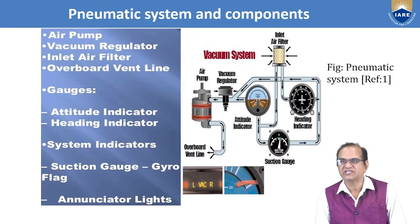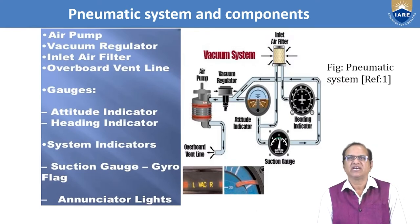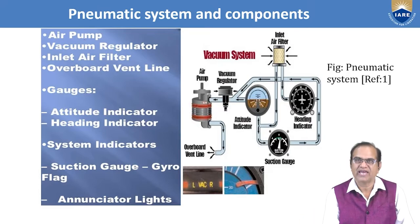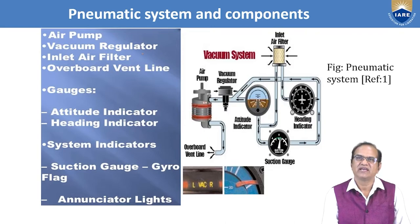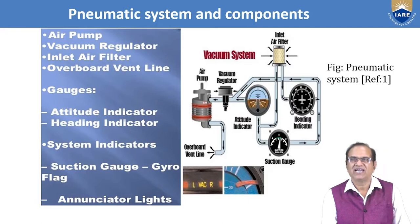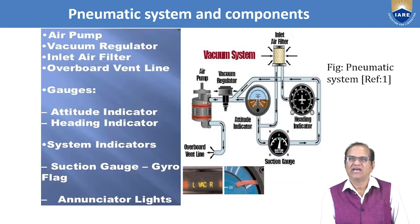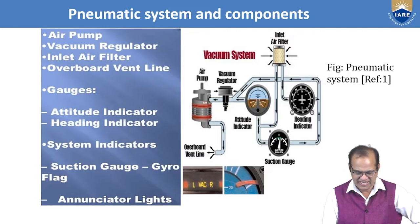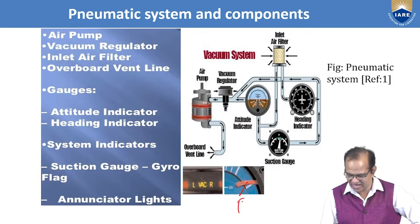The components of the pneumatic system include an air pump, a vacuum regulator, an inlet air filter, an overboard vent line, gauges, an attitude indicator, a heading indicator, a system indicator, a suction gauge, gyro flags, and enunciator lights. In the system diagram, air enters through the inlet air filter — the air coming from the vacuum system must be cleaned, and any moisture, dust, or dirt particles must be restricted.